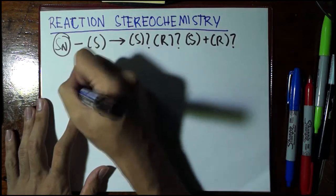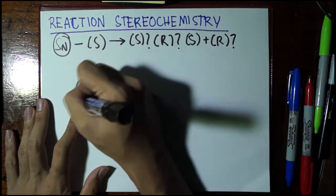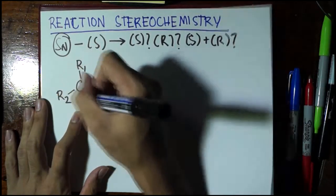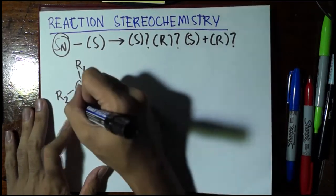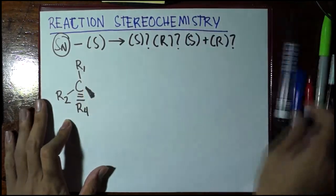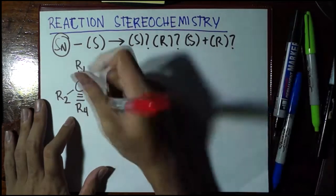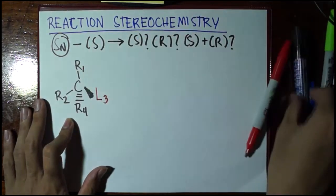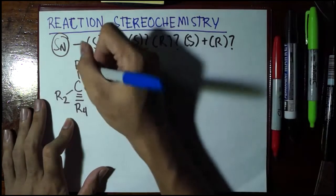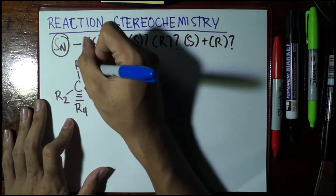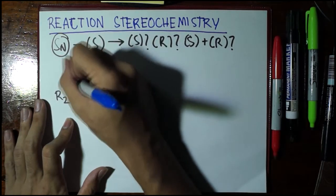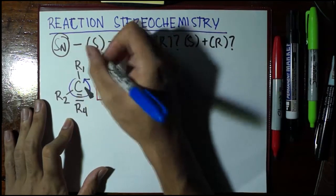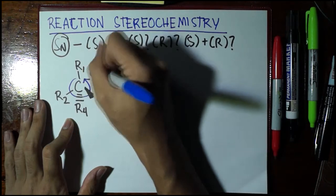Here, I'm going to draw a tetrahedral compound. Say this is R1, this is R2, this is R4, and I'll draw here a leaving group which is designated as 3, meaning that in the Cahn-Ingold-Prelog rules, if we try to determine whether this is S or R, we start from 1 rotating to the counterclockwise direction. And if it's counterclockwise, this is of the S.